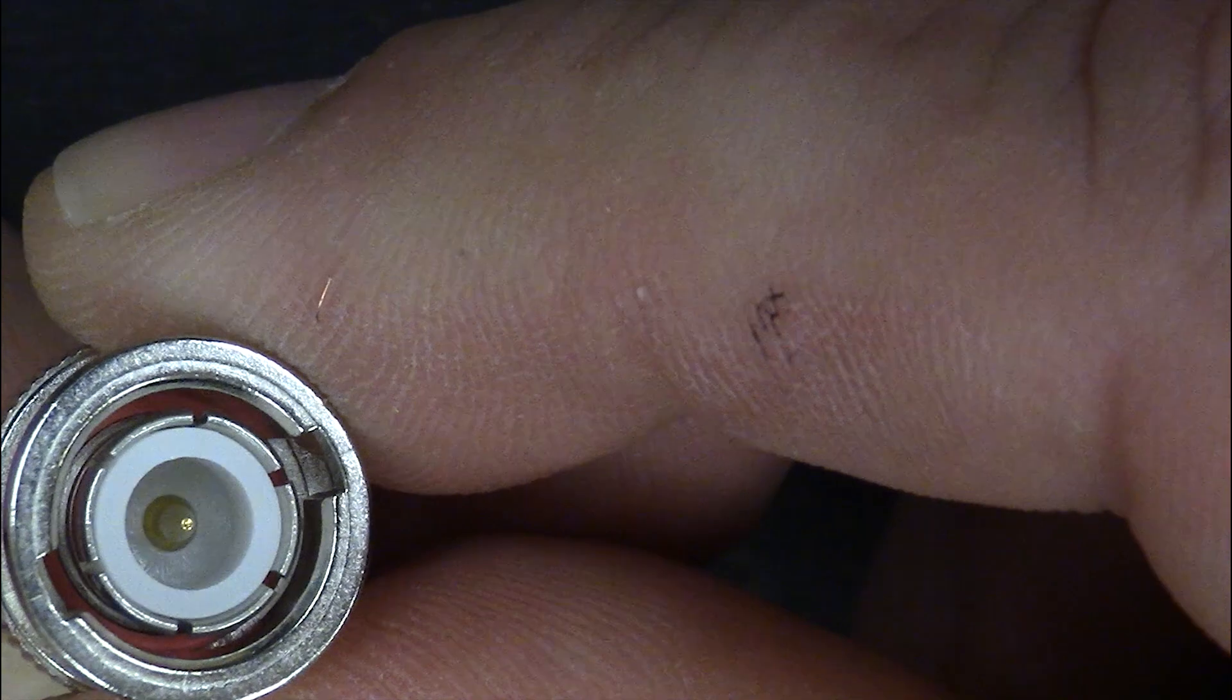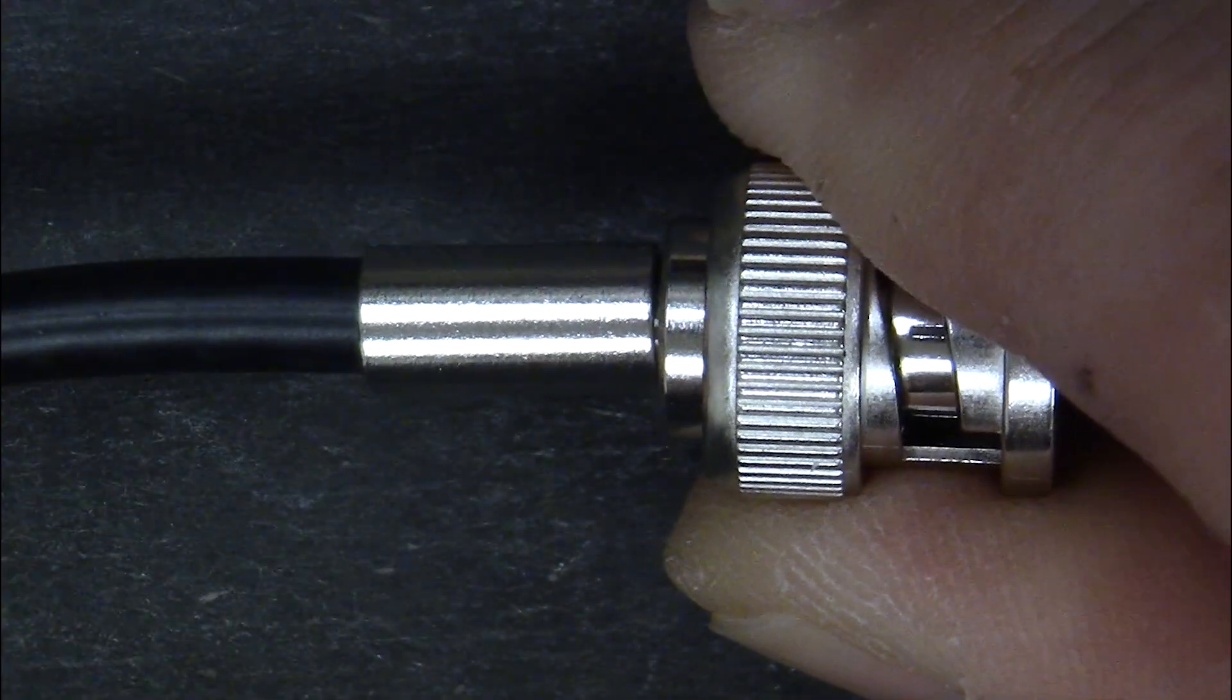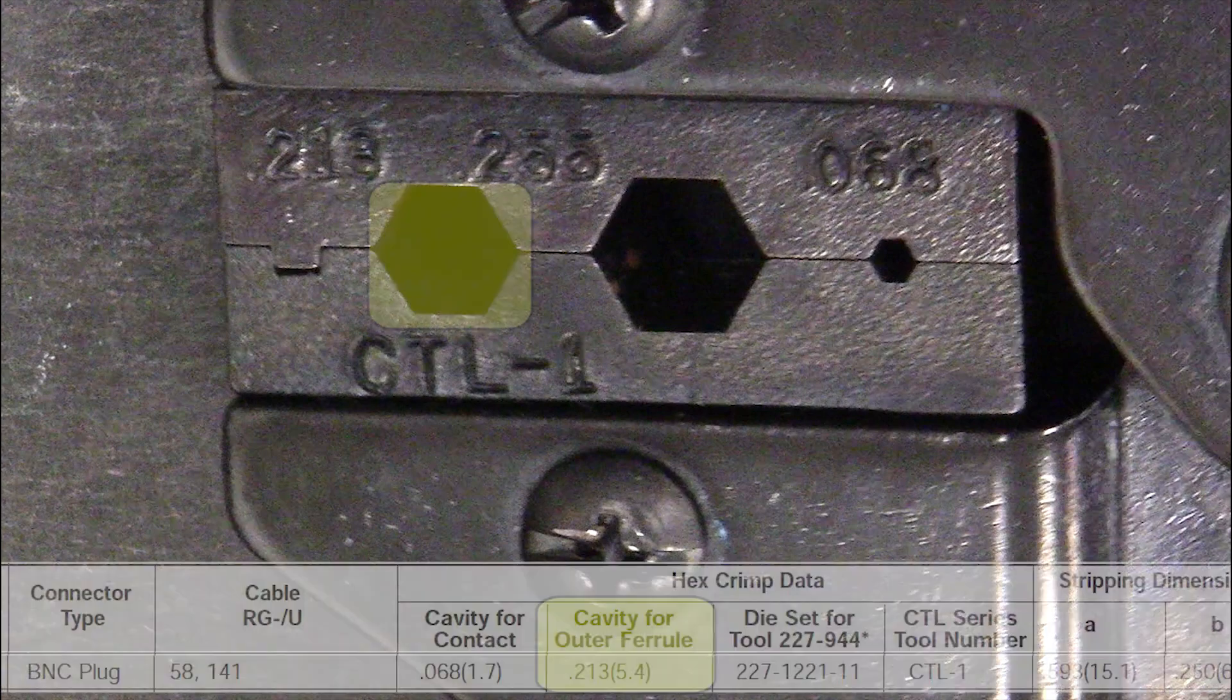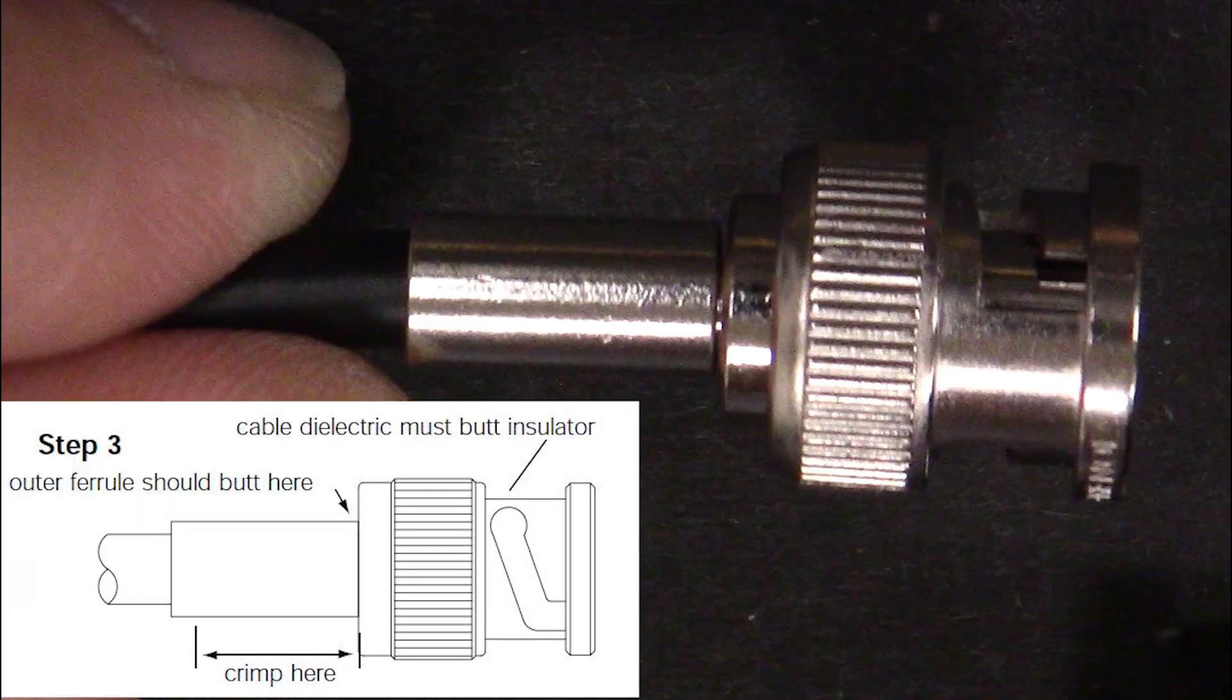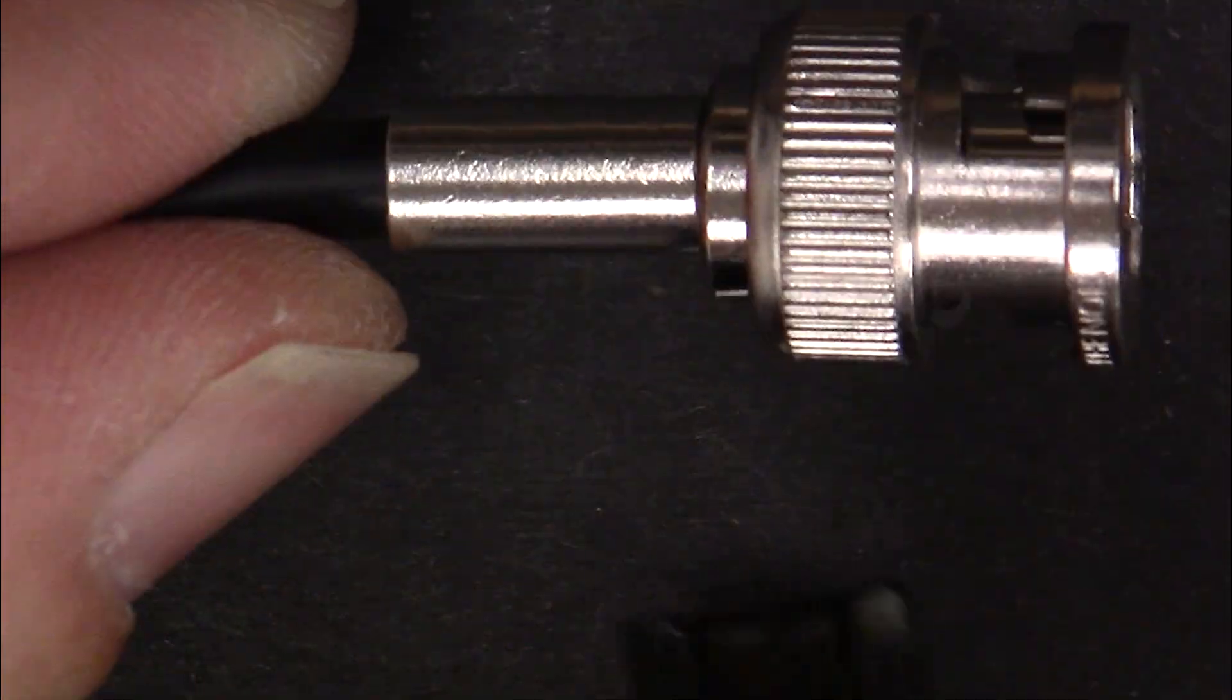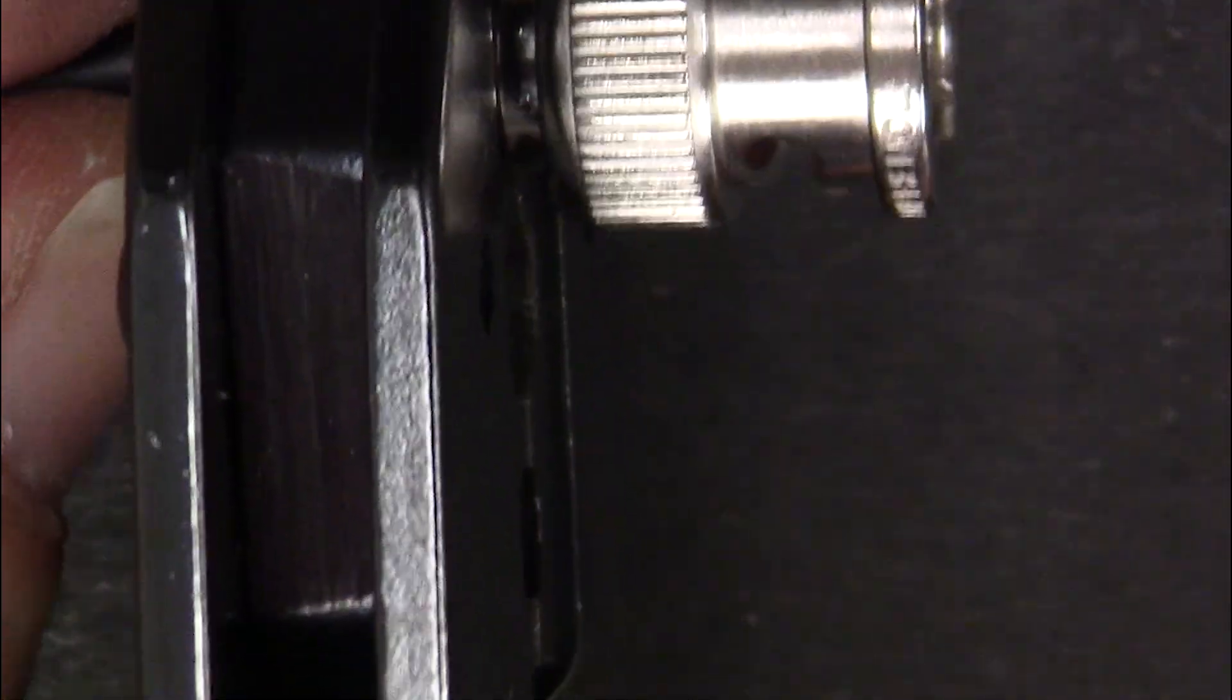Slide the outer ferrule onto the plug body. The data sheet specifies a .213 inch hex crimp for the outer ferrule. It should be crimped at the shown location. Crimp the outer ferrule and ensure the plug body and male contact are secured.